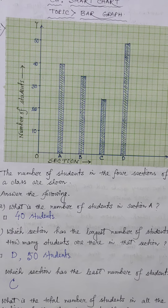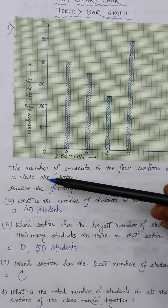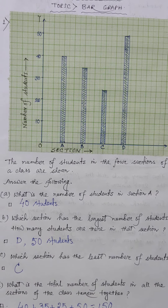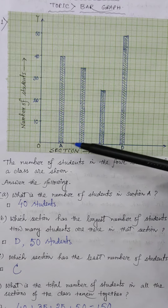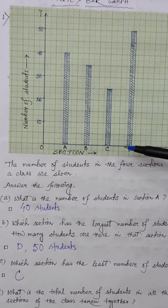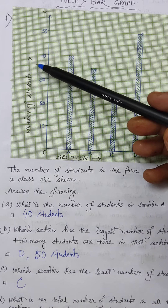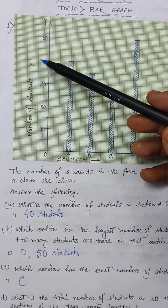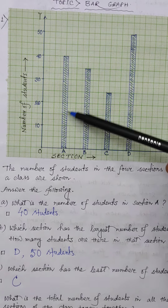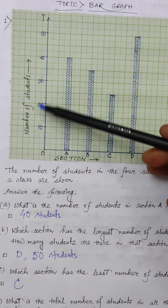In this example, the number of students in the four sections of a class are shown. See very carefully — here I have taken the sections along the x-axis and the number of students along the y-axis. And the height of the bar represents the number of students.